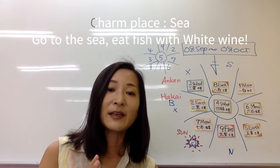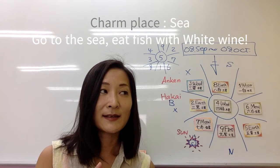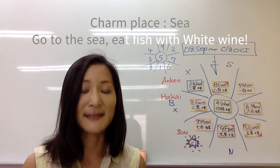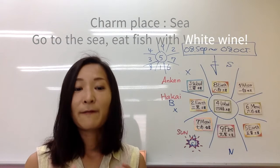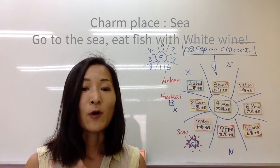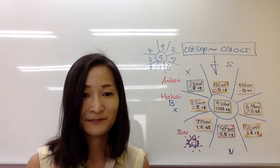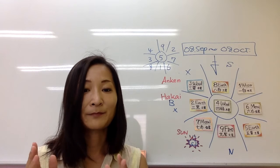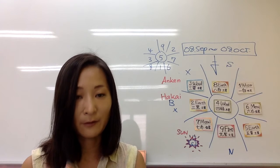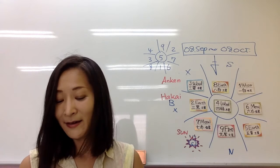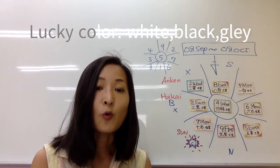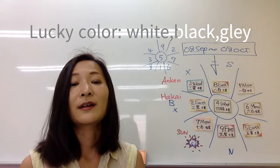And lucky place is sea. Please go to the sea, eat fish with white wine. This is lucky place and lucky food, drinks. Lucky color is white, and black, and gray.